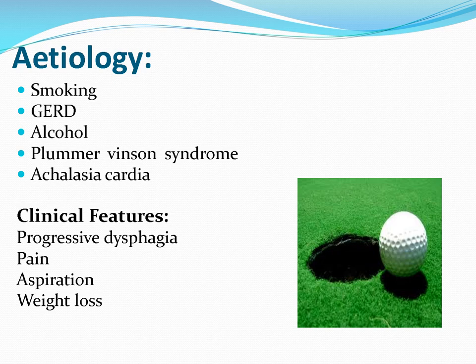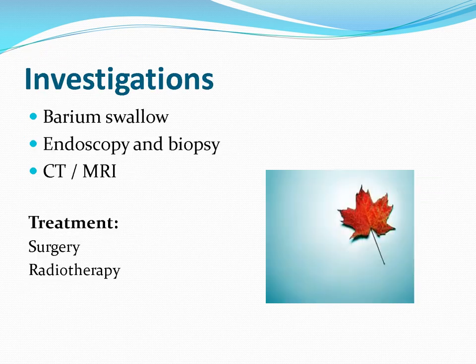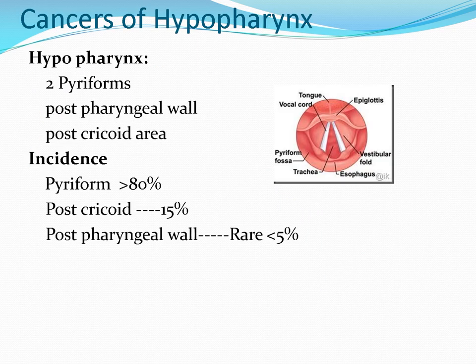The patient presents with progressive dysphagia — increasing day by day — along with pain and aspiration. Investigations include barium swallow, endoscopy with biopsy, CT, and MRI to assess spread. Treatment is combined: surgery and radiotherapy depending on the stage of the malignant tumor.